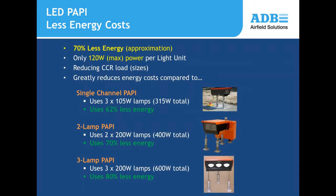A major advantage of the LED PAPI is energy efficiency. The LED PAPI uses 70% less energy compared to an ADB single-channel PAPI using 305-watt lamps. It requires 62% less energy versus a traditional two-lamp PAPI using two 200-watt lamps per unit, and 80% less energy compared to a three-lamp PAPI.